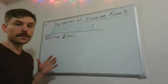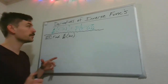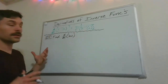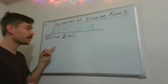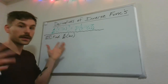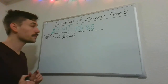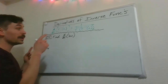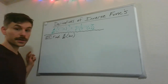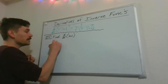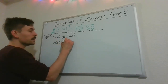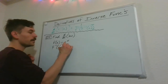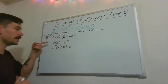Now that we've looked at the general equation for the derivative of an inverse function, which I've put here again, we can apply it to some examples. A function that we use a lot would be log of x — natural log of x, I'm just calling it log of x. We might want to find its derivative, and we know what its inverse is: e to the x.